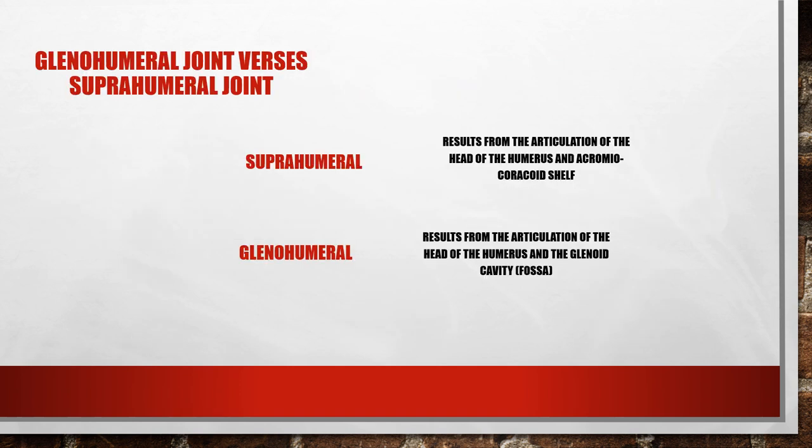The suprahumeral joint results from the articulation of the head of the humerus and the acromiocoracoid shelf. The glenohumeral joint results from the articulation of the head of the humerus and the glenoid cavity.